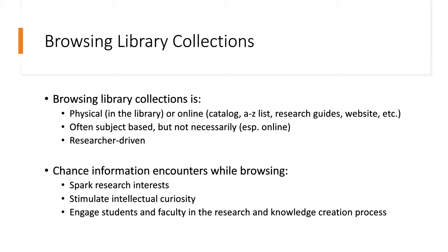Browsing library collections can happen physically in the stacks in your buildings, or it can happen online through things like your research guides, your website, your A-to-Z list, or your catalog. Browsing in the stacks is usually a visual and tactile experience — people are seeing resources located nearby on the shelf, taking books off, flipping through them, scanning the table of contents. It's subject-based because of how libraries organize their collections, and it's a researcher-driven action happening organically.